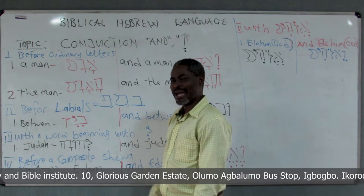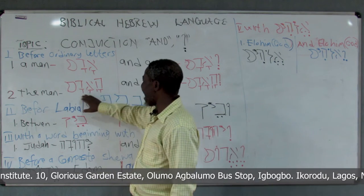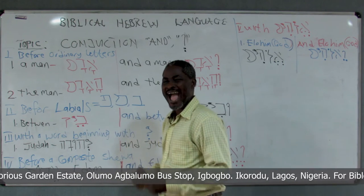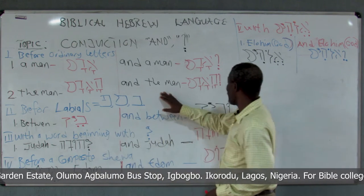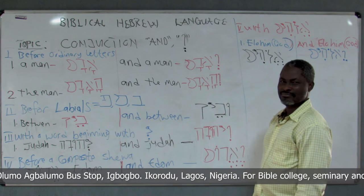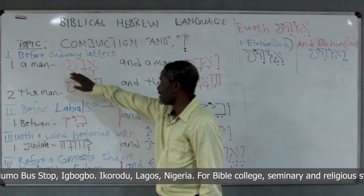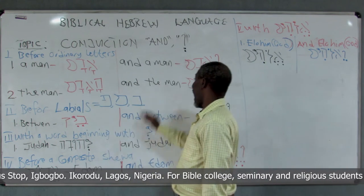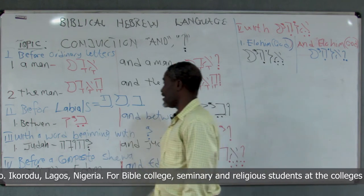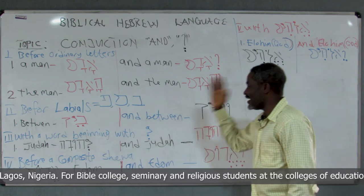Now let's say 'the man.' The man is 'ha-Adam.' Even if I want to say 'and the man,' it becomes 'waw ha-Adam.' This is very straightforward and simple. A man is 'Adam'; 'and the man' is 'waw ha-Adam.'